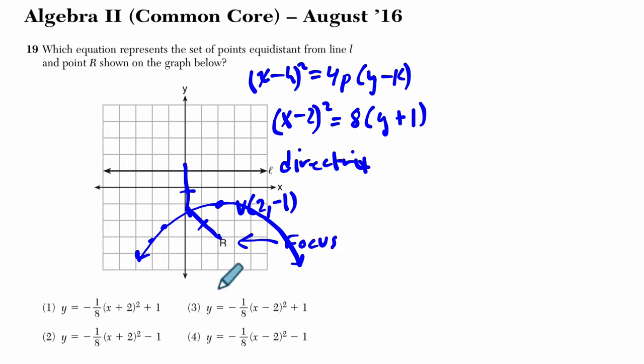Notice they've isolated y, so to get y by itself, I divide both sides by 8, or multiply by 1/8. So 1/8(x - 2)² equals y + 1, and then I subtract 1 on both sides. 1/8(x - 2)² - 1 equals y.